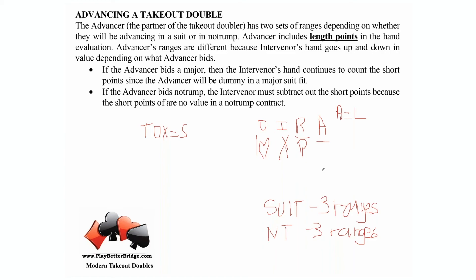The theory is partner made a takeout double stating they have four of the major. If you have four of the major too, then you've got the golden fit. You don't want to go messing around in minors, even if you have six of them. Bid the major to confirm to partner this is our suit. Now we just have to decide how high.